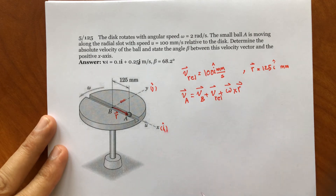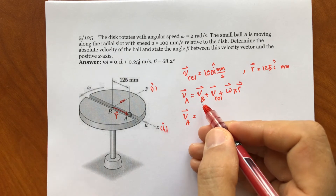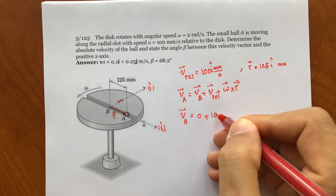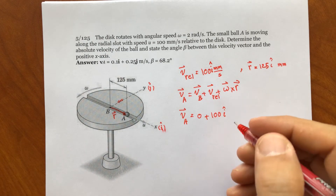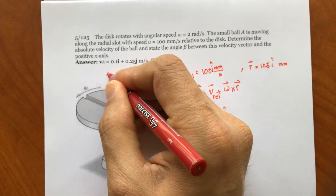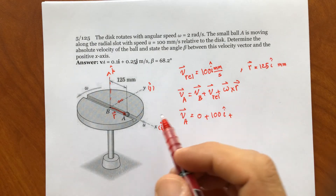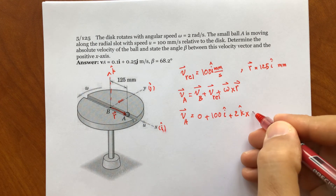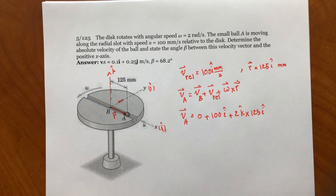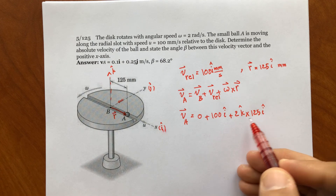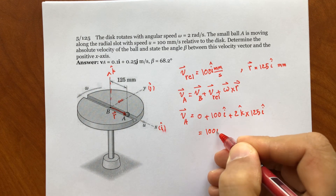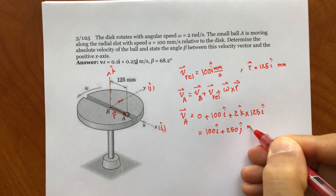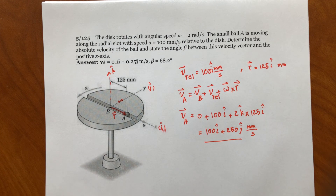Plugging in: the actual velocity of A equals the velocity of the origin, which is zero, plus the relative velocity of 100 mm/s in the î direction, plus omega cross r. Omega is 2 radians per second in the k̂ direction, and r is 125 in the î direction. k̂ cross î is ĵ, so we get 100 î plus 250 ĵ, with units of millimeters per second. This is the actual velocity of point A.